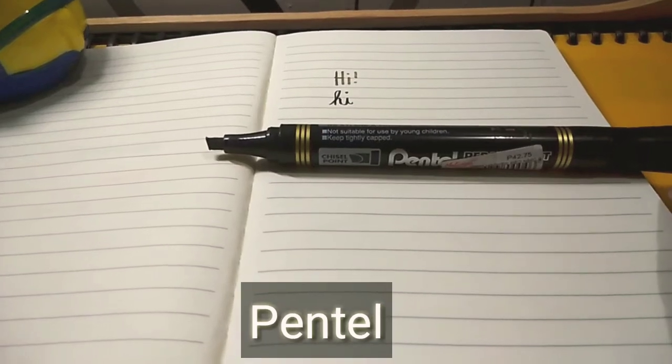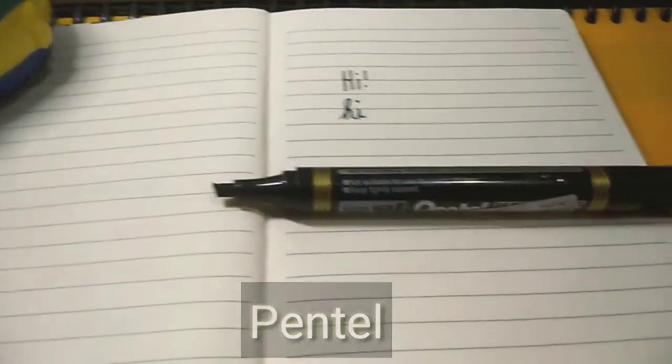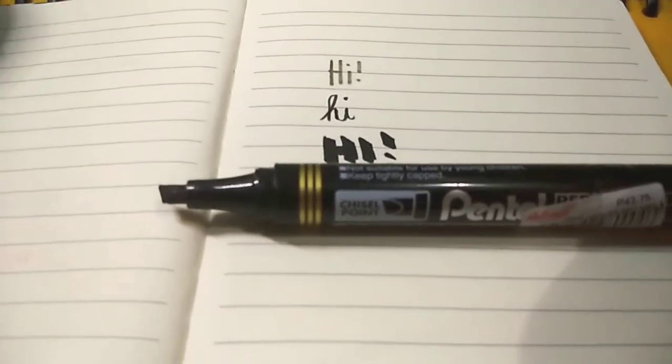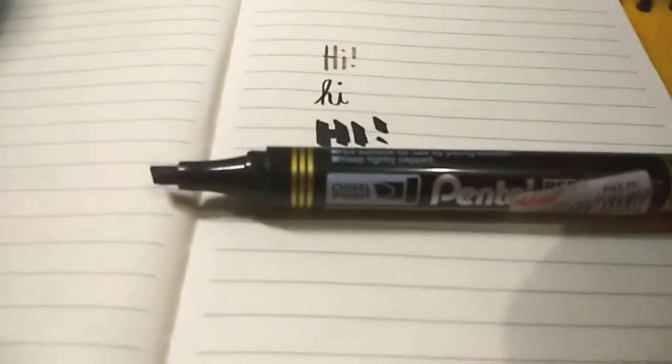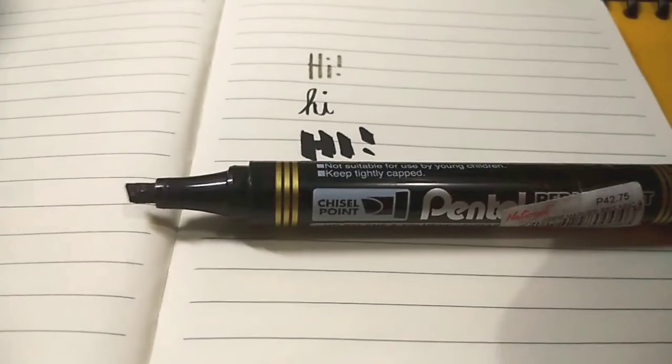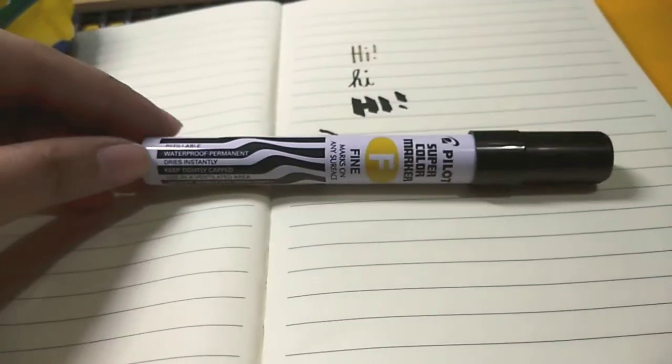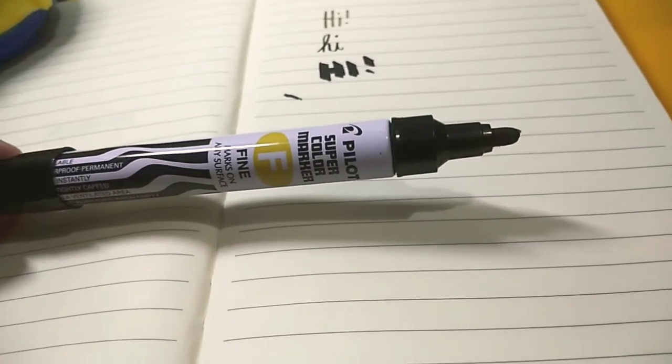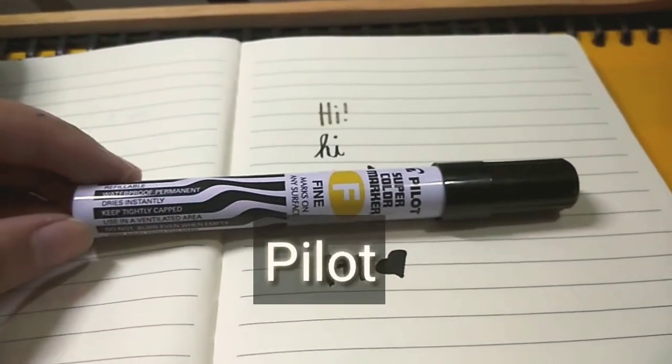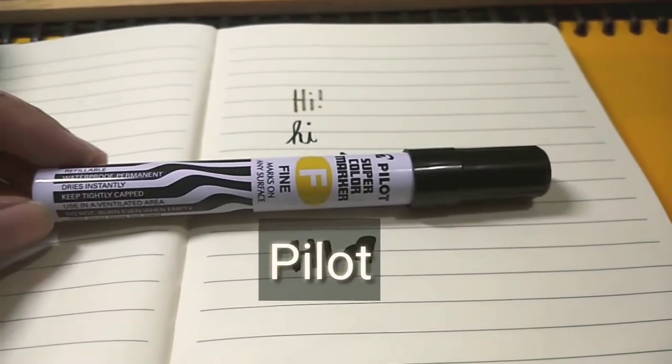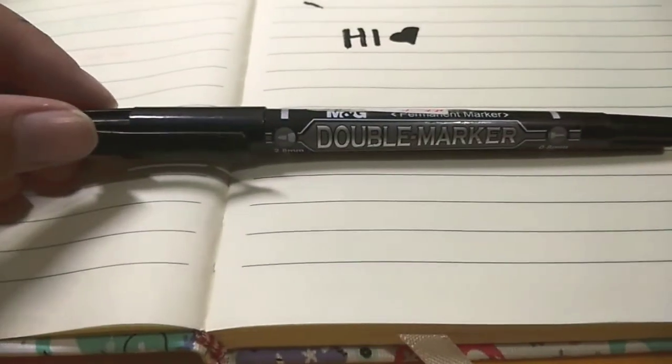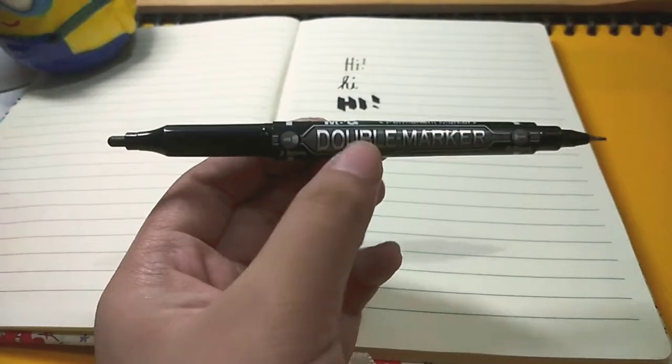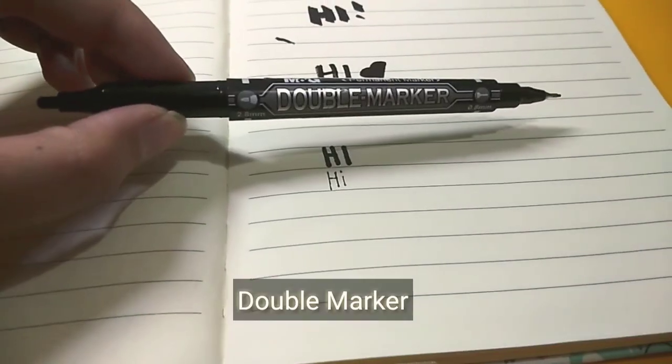Next is this Pentel permanent marker in broad tip. I'm using this whenever I am doing a project of mine. Next is this Pilot in fine tip. I'm using this also in doing marks. Next is this double marker. It is a ball pen tip and a Pentel pen tip.